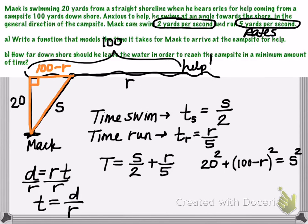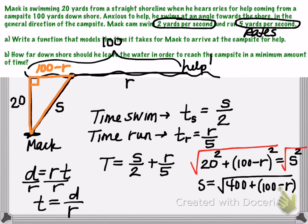The purpose of this equation is we want to solve for one of the variables so that we can substitute into my time equation and eliminate a variable. It doesn't matter whether you solve for R or for S. Do whatever is easiest, and in this case, it'd be much more efficient to solve for S by square rooting both sides. So we'll end up with S equals the square root of 400 plus the quantity 100 minus R squared.